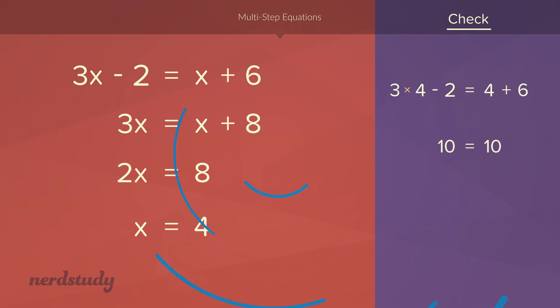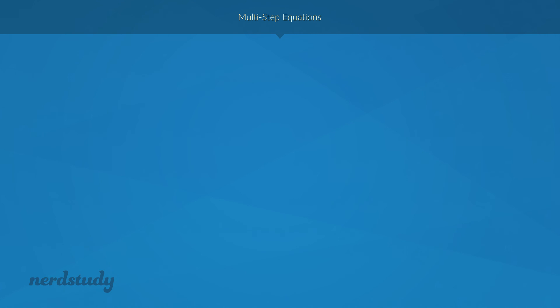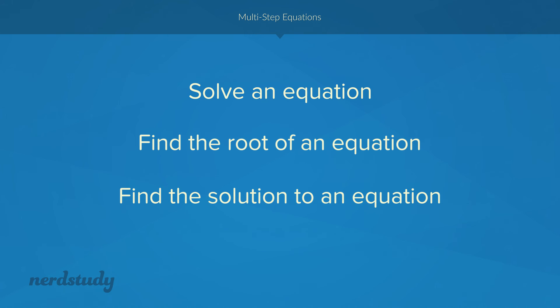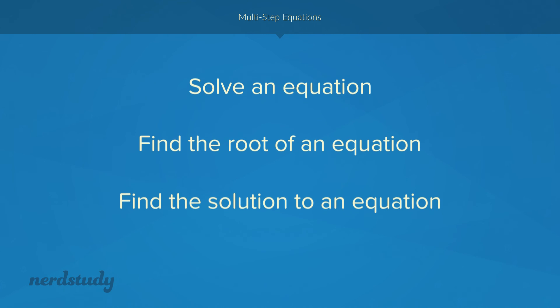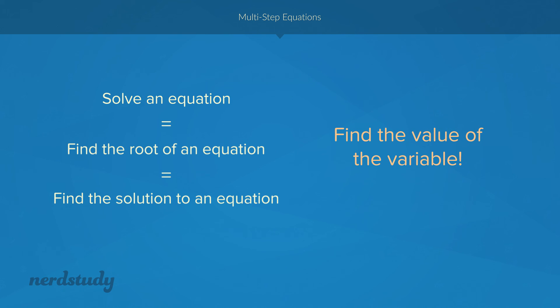Awesome! One last easy thing that we will add to this lesson is this. When somebody asks you to solve an equation, find the root of an equation, or find the solution to an equation, you're being asked to do the exact same thing. In the end, you're being asked to find the value of the variable, which is pretty much what we've been doing in this video all along. So don't get confused if your test randomly tells you to find the root or the solution of an equation. All you need to know how to do is isolate your variable onto the left side by doing inverse operations in a reverse BEDMAS order.